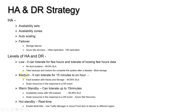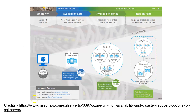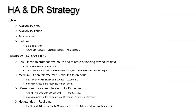There are four different levels of HA and DR. Based on the criticality of your business, you can define low, medium, warm standby, or hot standby. For example, for Amazon or Flipkart-type businesses, it will definitely fall under hot standby because even a few minutes of downtime will cause millions of dollars of loss, especially during Thanksgiving Day or festival offer periods.